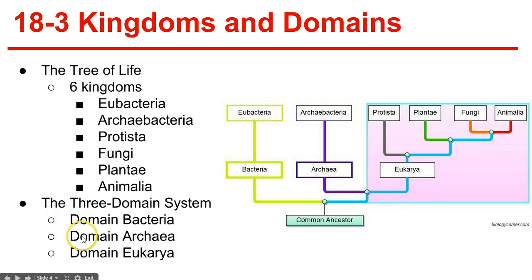Next, the domain Archaea. These are also unicellular and prokaryotic. They live in some of the most extreme environments, such as volcanic hot springs, brine pools, and black organic mud totally devoid of oxygen. The cell membranes of these organisms contain unusual lipids that are not found in any other organism. This domain corresponds to the kingdom Archaebacteria.